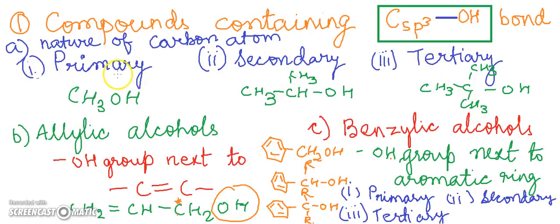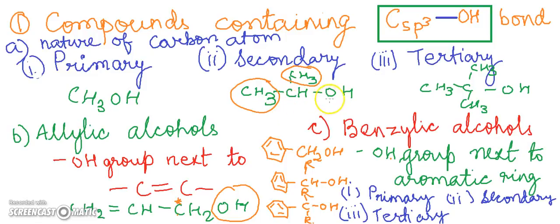In primary alcohols, there are none or one alkyl group on the carbon bonded to the OH group. In secondary alcohols, there are two alkyl groups on the carbon atom attached to the OH group. In tertiary alcohols, three alkyl groups are attached on the carbon bonded to the OH group. So here we have primary alcohol, secondary alcohol, and tertiary alcohol.